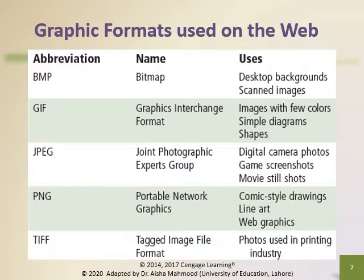PNG is a patent-free compressed graphics format that restores all image details when the file is viewed — that is, PNG format does not lose image quality during compression. BMP, which we call bitmap, is used for desktop backgrounds and scanned images. GIF is a graphics interchange format used for images with few colors, simple graphs, diagrams and shades.